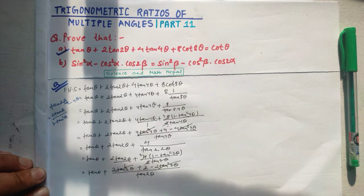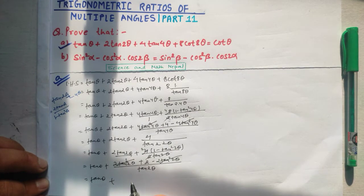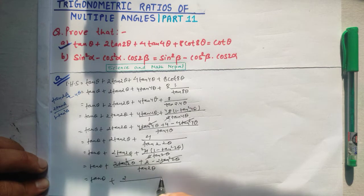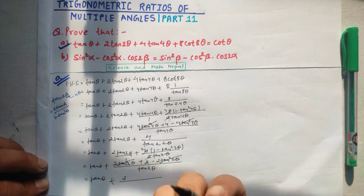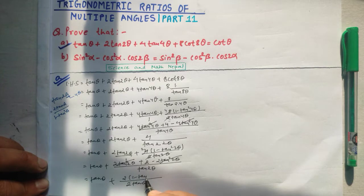Continuing, tan θ plus 2 divided by tan 2θ. Substituting tan 2θ equals 2 tan θ divided by 1 minus tan² θ, the 2 and the 2 cancel. We are left with tan θ plus 1 minus tan² θ divided by tan θ.